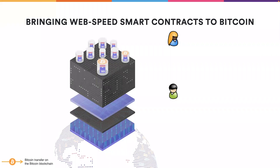Let's now look at how we are doing this. We take the most general way to bring smart contracts to the Bitcoin blockchain. We enable canisters to directly hold Bitcoin on the Bitcoin network. This allows users to transfer Bitcoin directly to canisters, and it allows canisters to transfer Bitcoin to other canisters or to users. All this happens on the Bitcoin blockchain, so that's extremely powerful because it immediately brings all the capabilities of smart contract canisters to Bitcoin smart contracts.